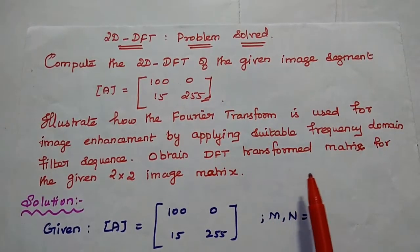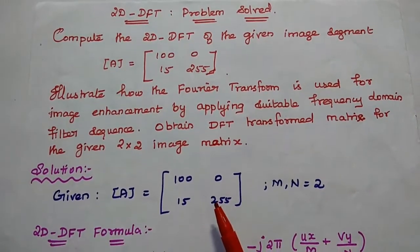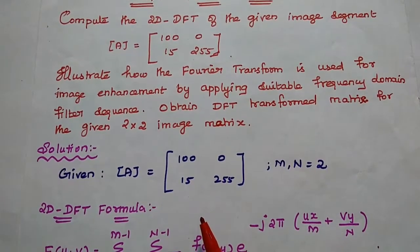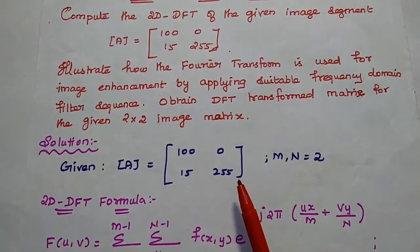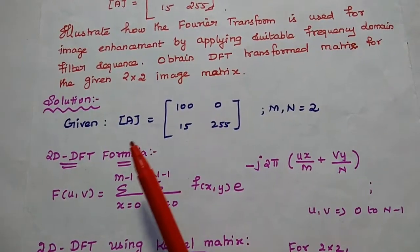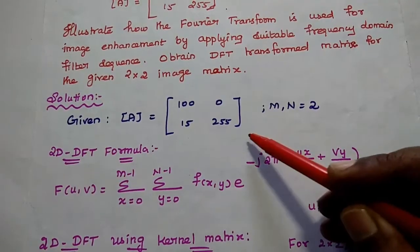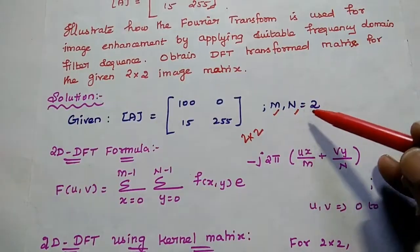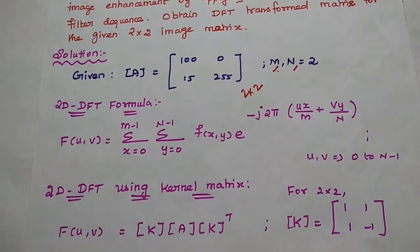Obtain the DFT transformed matrix for the given 2 by 2 image matrix. In this problem, they have given us a 2 by 2 image matrix and we are going to obtain the discrete Fourier transform. In the solution part, first we need to write the given data. A matrix is equal to 100, 0, 15, 255. It is a 2 by 2 matrix, so we can take the number of rows and number of columns both equal to 2.